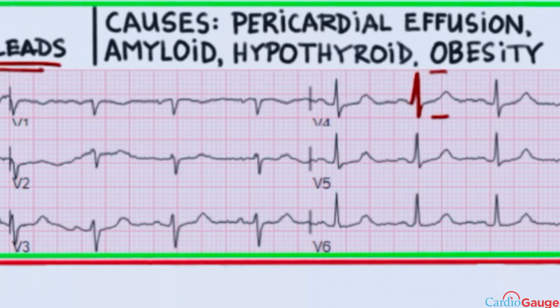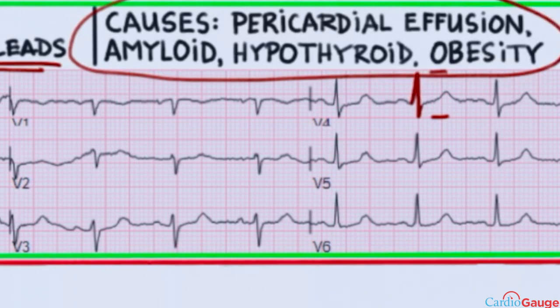Causes of low voltage include pericardial effusion, amyloid, hypothyroidism, and obesity.